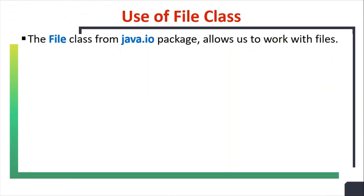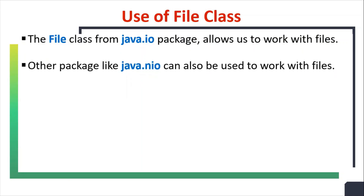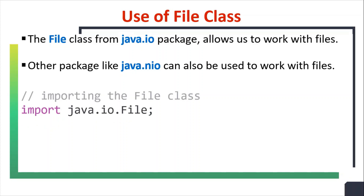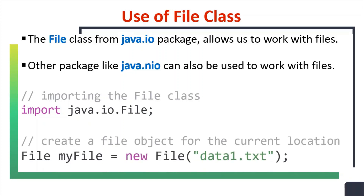The File class from the java.io package allows us to work with files. Other packages like java.nio can also be used to work with files. To use this File class we write 'import java.io.File'. This statement allows us to use the File class in our program. We then create one object called 'myFile', and after creating this object we will be able to perform various operations on the data1.txt file.